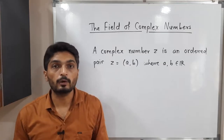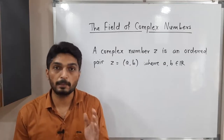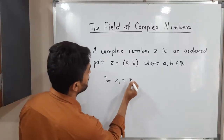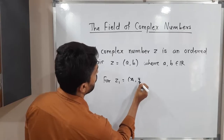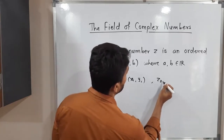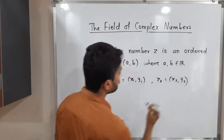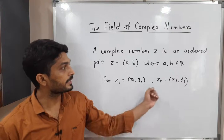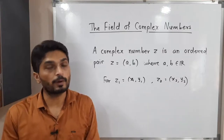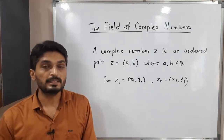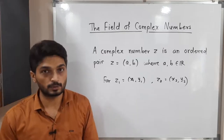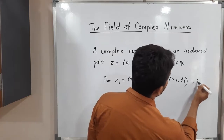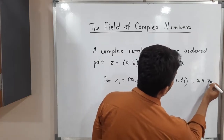In a field we always need two operations, so let us define addition and multiplication. We take two numbers: z1 equals (x1, y1) and z2 equals (x2, y2) — equivalently z1 equals x1 plus i·y1 and z2 equals x2 plus i·y2. Here x1, y1, x2, y2 are all real numbers.